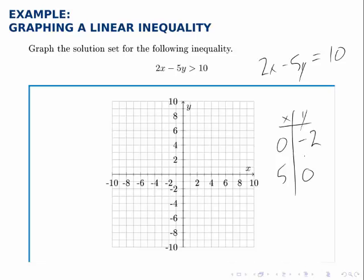These two points are the two intercepts, so the point (0, negative 2) is down here and the point (5, 0) is over here. We can connect these two points with a line and we'll make the line dashed because it's strictly greater than.